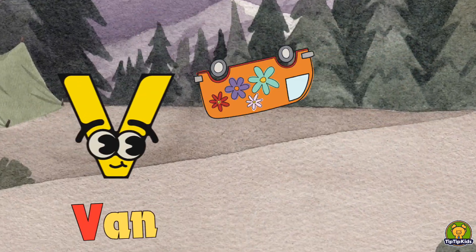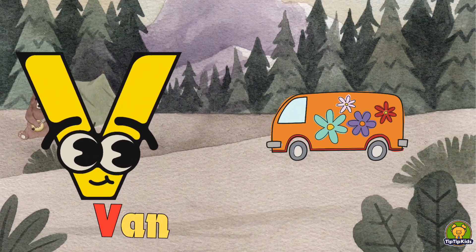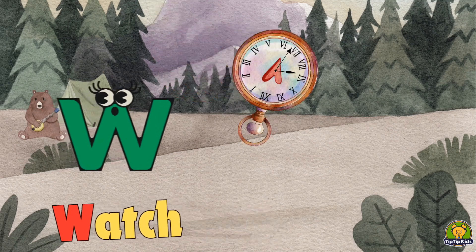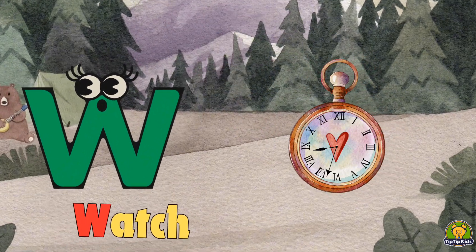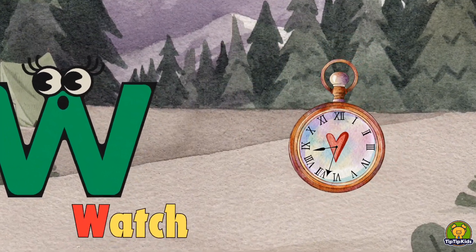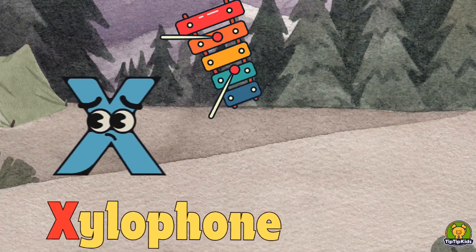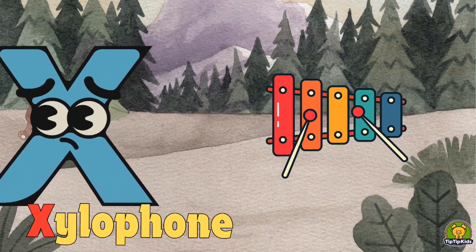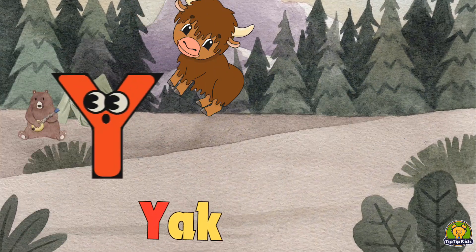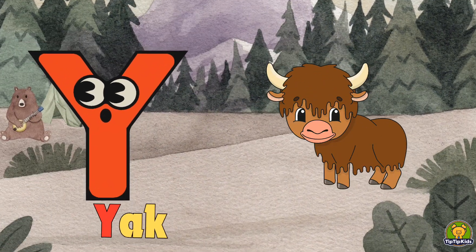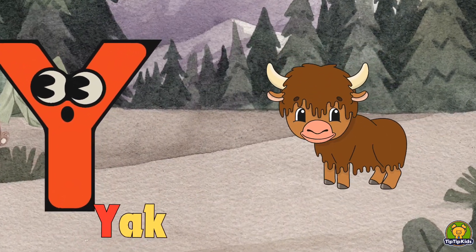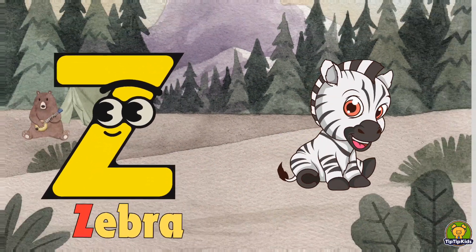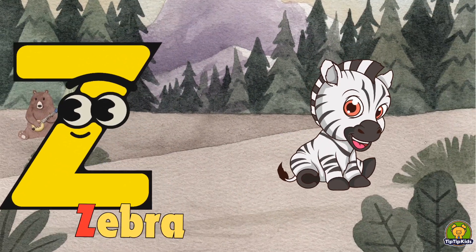V for wedge, W for watch, X for xylophone, Y for young, Z for zebra.